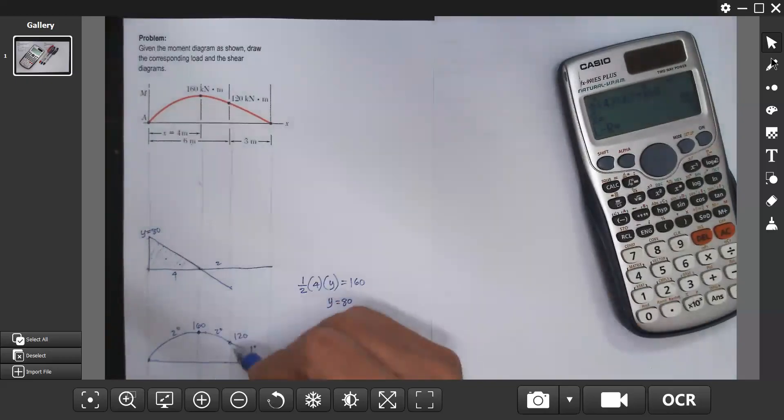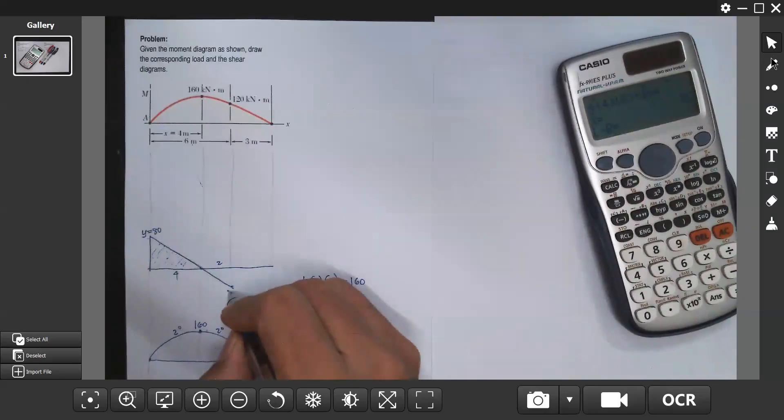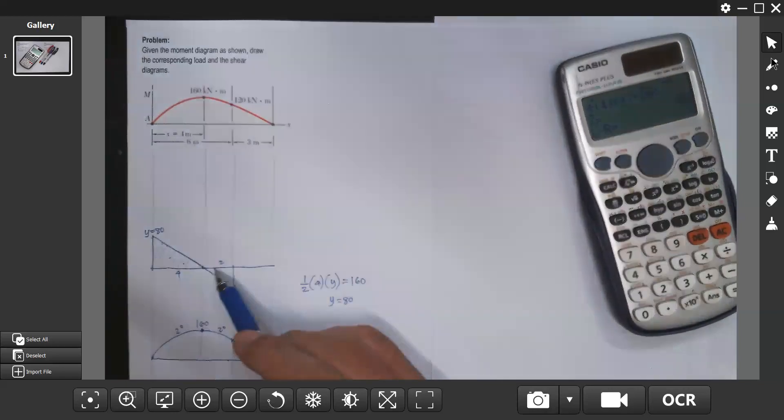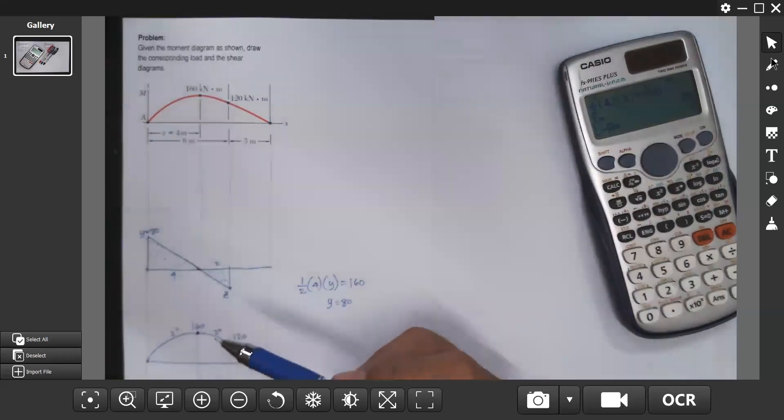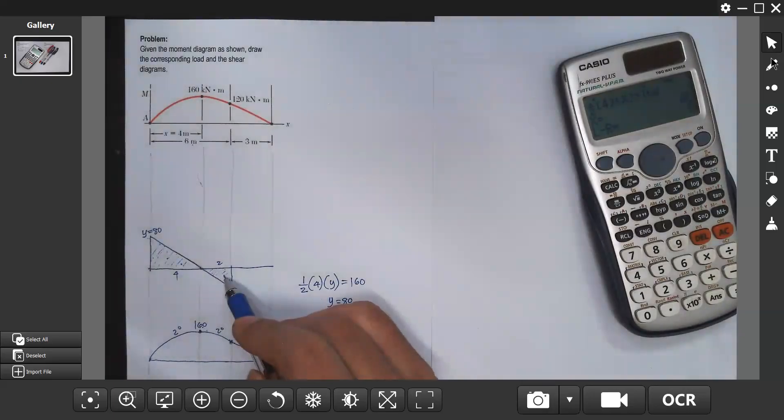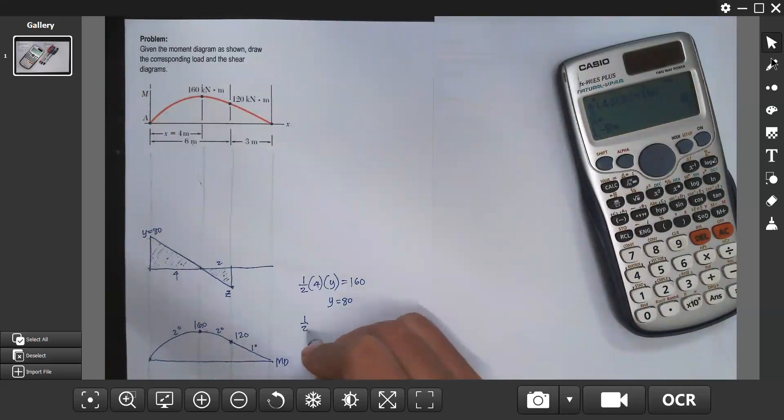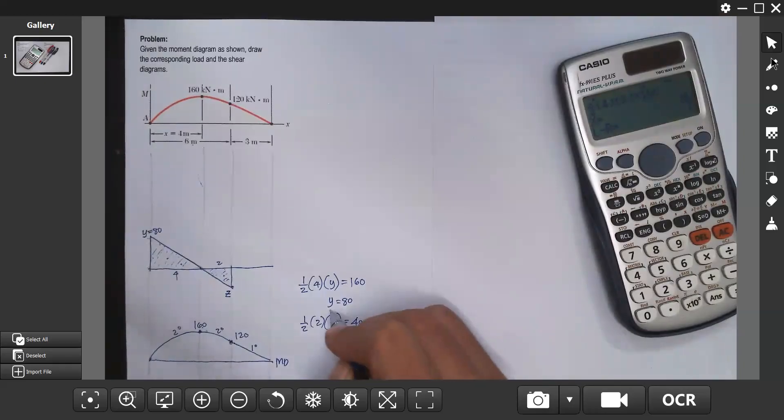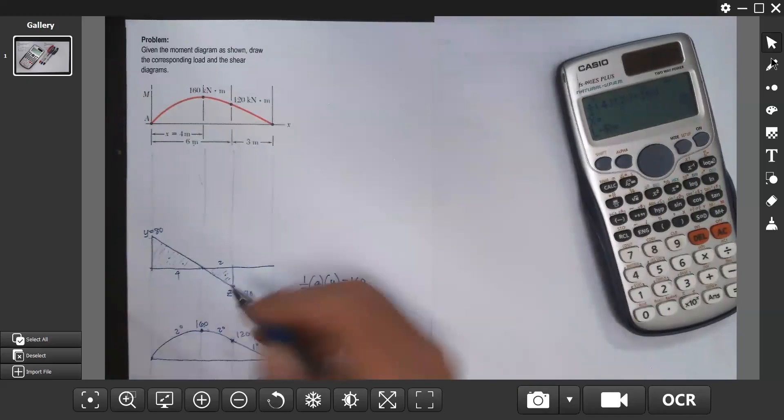For this value, let's consider this one as z. The area is equal to the change in moment. From 160, it drops to 120, it means there is a decrease of 40. From 160 to 120, it decreased by 40. The decrease of 40 is equal to this area. So one half of 2 times z equals 40. Therefore z here is 40. Negative 40, below the horizontal line.